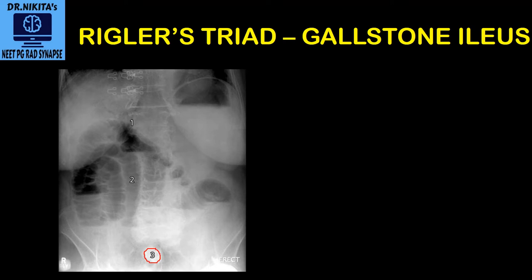Because the gallstone gets stuck here, you see dilatation of the proximal small bowel loops, as the gallstone is obstructing the bowel. The proximal small bowel loops are dilated. So you see small bowel obstruction — that is the second feature of the triad.